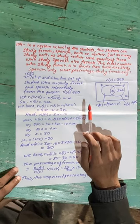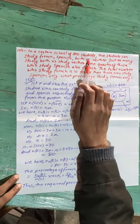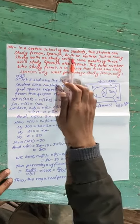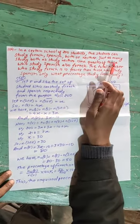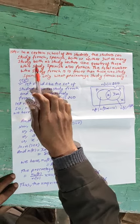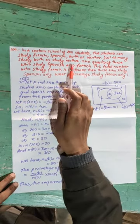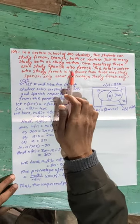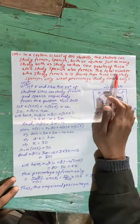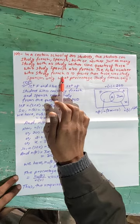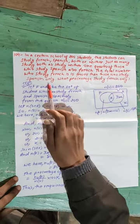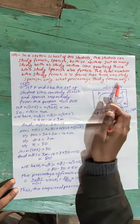In a certain school of 200 students, the students can study French, Spanish, both, or neither. Just as many study both as study neither. One quarter of those who study Spanish also study French. The total number who study French is 10 fewer than those who study Spanish only. What percentage study French only?